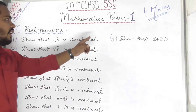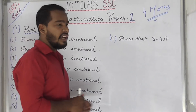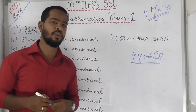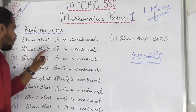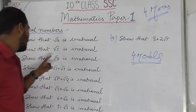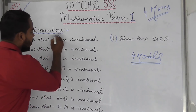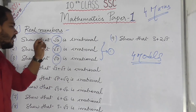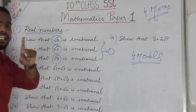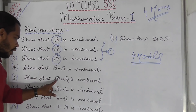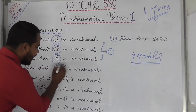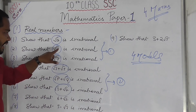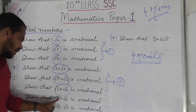The first chapter is real numbers. We have four models. The first model: show that root 2 is irrational, show that root 5, show that root 7 — these are the first model questions. The second model involves a single root and a double root: root 3 plus root 5, root p plus root q, root 3 plus root 2.